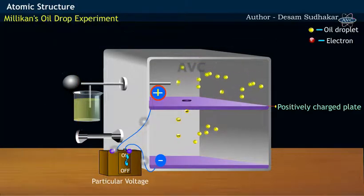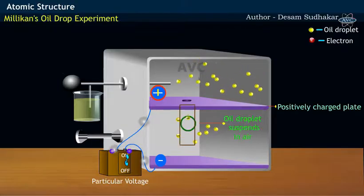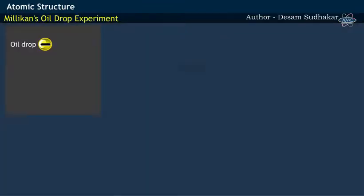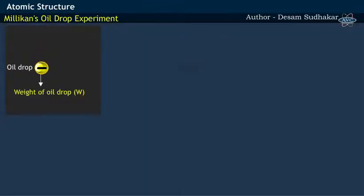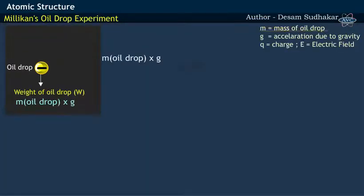At a particular voltage, the oil droplet is suspended in air. At this point, the weight of oil droplet, which is the product of mass and acceleration due to gravity or Mg, equals to the electrical force acting on the oil droplet, which is the product of charge and electric field or QE.